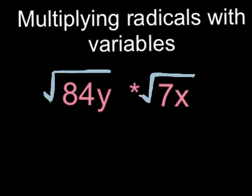Today I will be teaching you how to multiply and simplify radicals with variables. The equation we're doing is square root of 84y times square root of 7x.